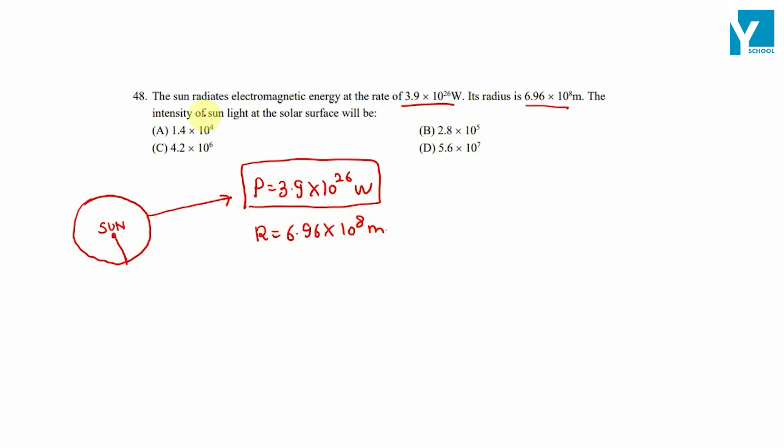The intensity of the Sun's light at the solar surface will be what? Intensity means energy per unit area and per unit time, which is power divided by area, per unit area.